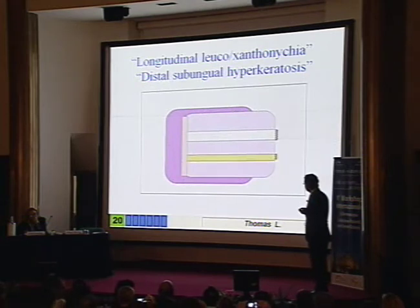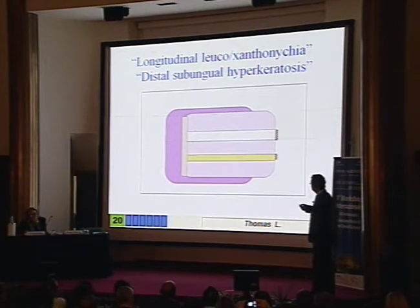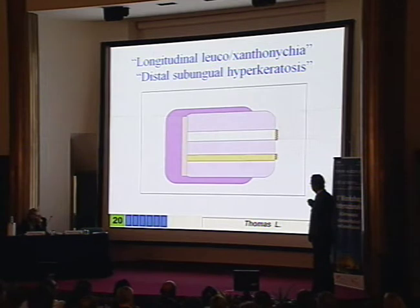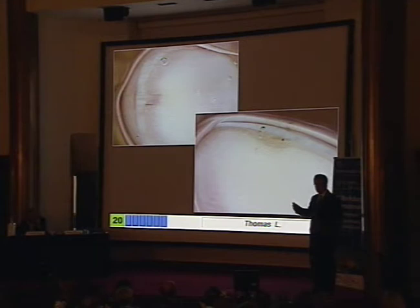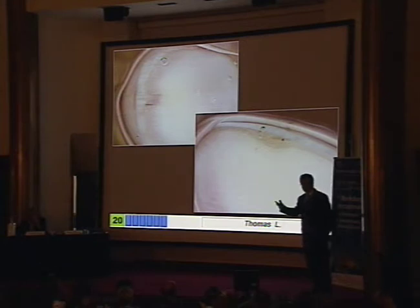Looking at less pigmented tumors, white bands, yellow bands, but especially hyperkeratosis underneath the nail plate are in favor of epithelial tumors of the nail matrix. These epithelial tumors are onychomatricoma, onychopapilloma, and squamous cell carcinoma.